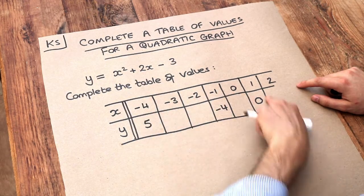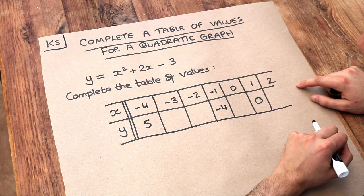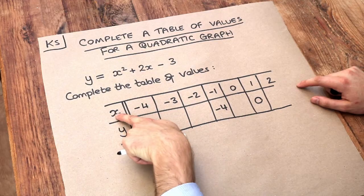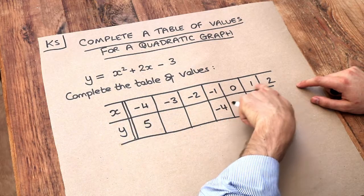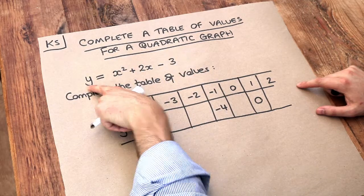We want to complete a table of values so we can subsequently draw what this graph looks like. All we need to do is take each x value given to us and substitute it into the equation to work out what y is.